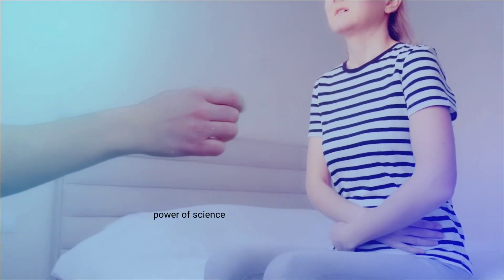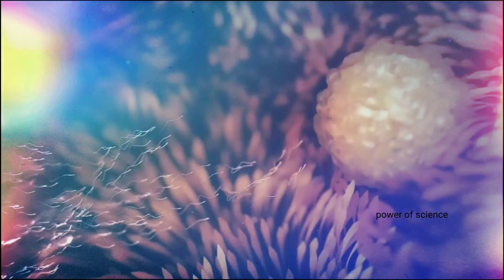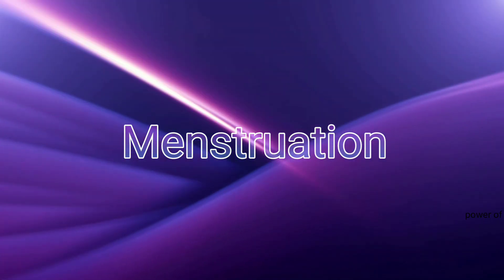During the menstrual cycle, there are four main phases. Each phase plays a crucial role in the reproductive process. Phase number one: Menstruation.